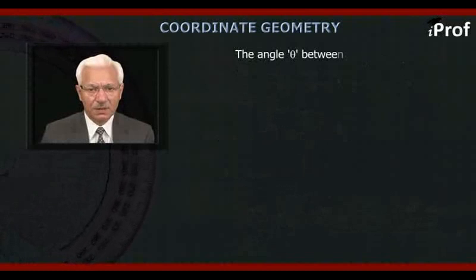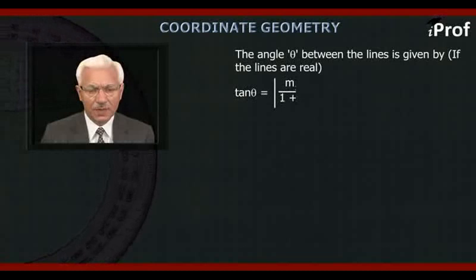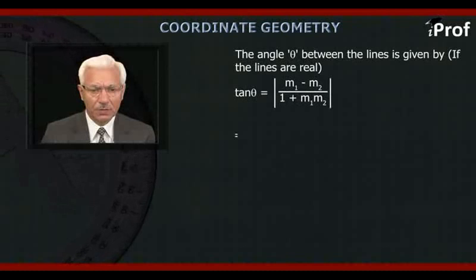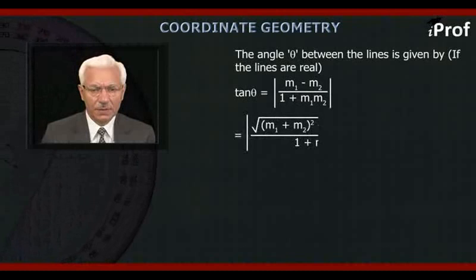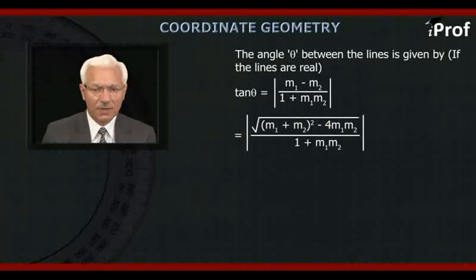The angle θ between the lines is given by tan θ = |m₁ − m₂| / (1 + m₁m₂), which equals √((m₁ + m₂)² − 4m₁m₂) / (1 + m₁m₂). Here m₁ + m₂ = −2h/b and m₁m₂ = a/b.